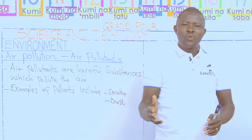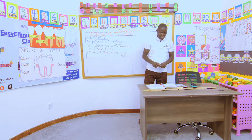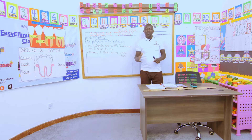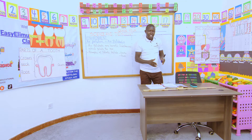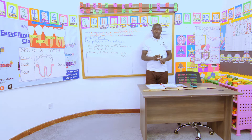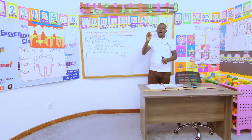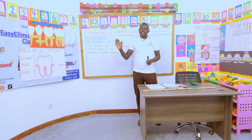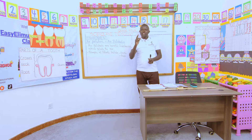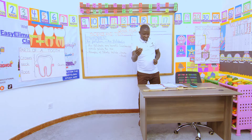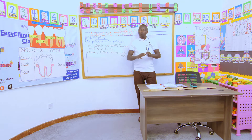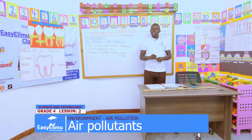During break time, we went around our school compound and visited some places. In our groups, tell me what we saw. When we went to our field, there was a lot of wind and we saw dust being blown away by the wind. Was our playground clean or polluted? John said our compound was polluted — and that is correct.